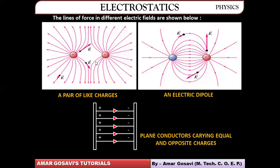For a pair of like charges, the lines of force repel each other. For a pair of unlike charges — also called an electric dipole with equal and opposite charges — the lines converge: they originate from the positive charge and terminate at the negative charge. For a plane conductor carrying equal and opposite charges, the lines of force move from positive to negative.